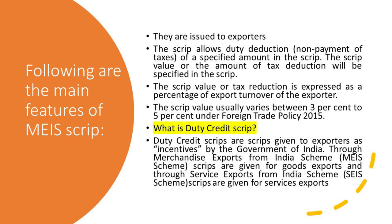Following are the main features of the MEIS script. They are issued to exporters. The script allows duty deduction on payment of taxes of a specified amount. The script value of the tax deduction is expressed as a percentage of export turnover of the exporter, and usually varies between 3% to 5% under Foreign Trade Policy 2015.